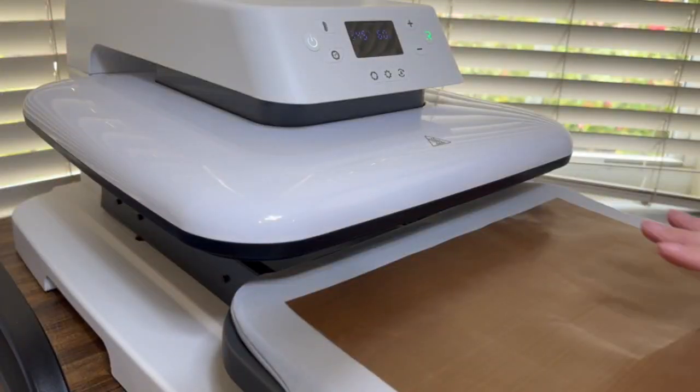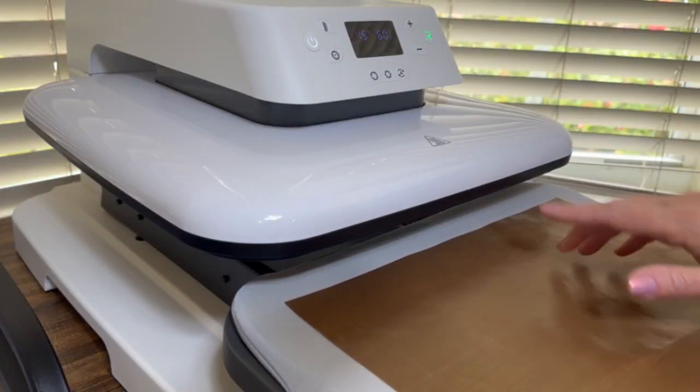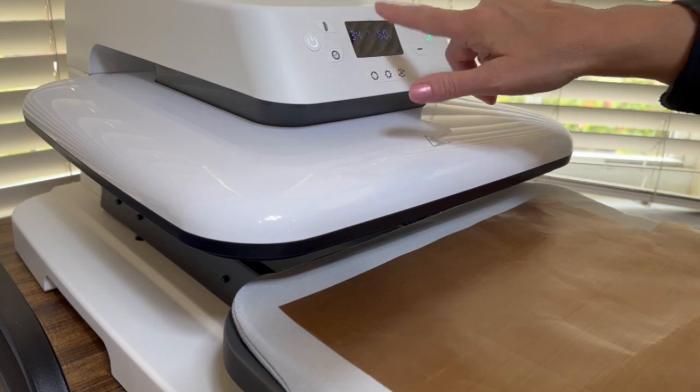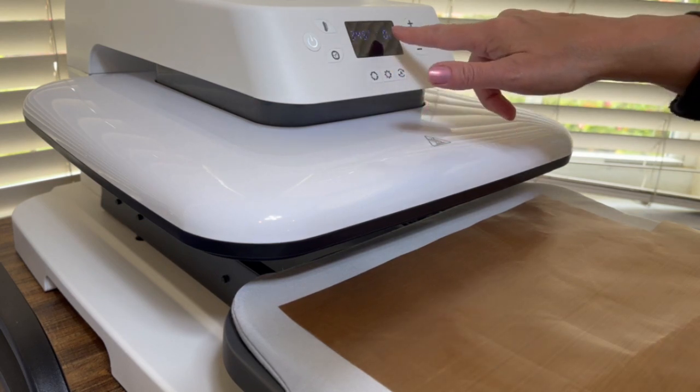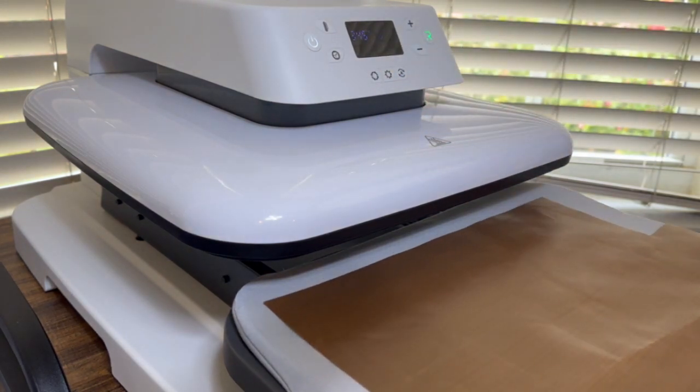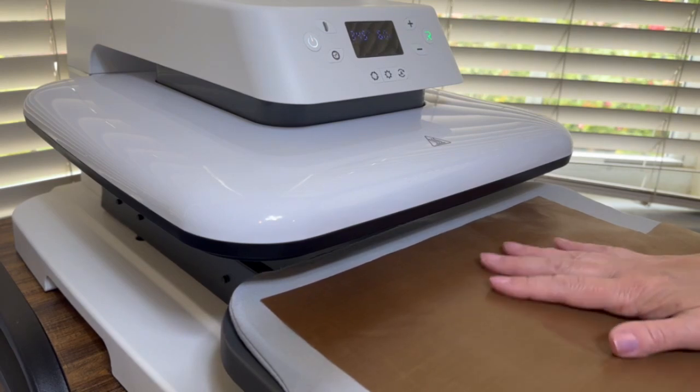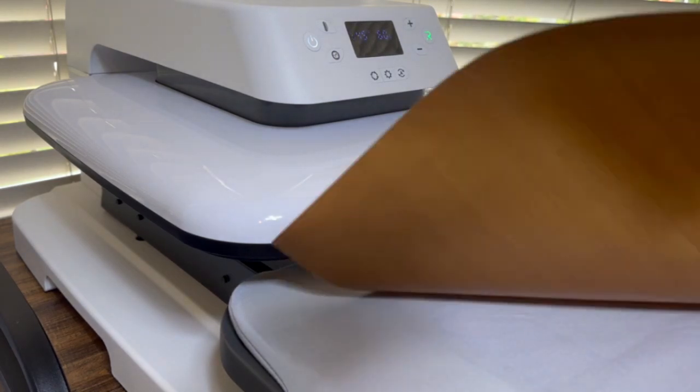I'm using the HTV RONT Heat Auto Press and I set it for 345 degrees for the temperature. We're going to do 60 seconds. And when I use this, I like to leave some sort of parchment paper or Teflon paper on top of the pad just to protect it.